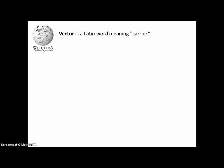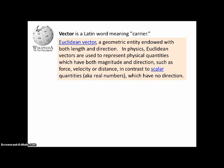Vector is a Latin word meaning carrier. A Euclidean vector is a geometric entity endowed with both length and direction. In physics, Euclidean vectors are used to represent physical quantities which have both magnitude and direction, such as force, velocity, or distance, in contrast to a scalar quantity, otherwise known as real numbers, which have no direction, just magnitude.